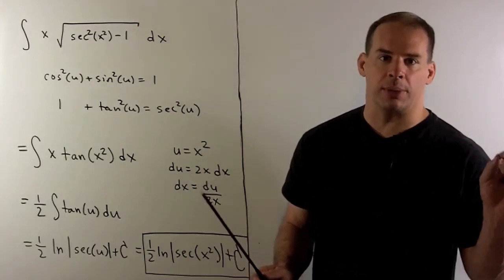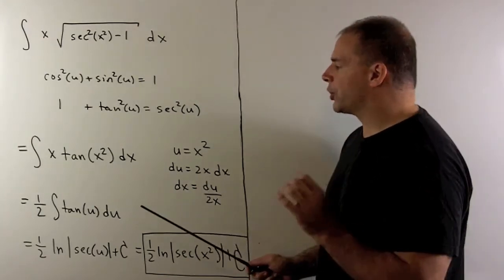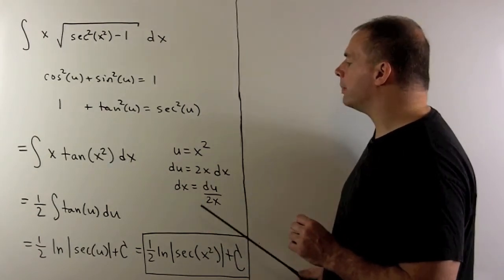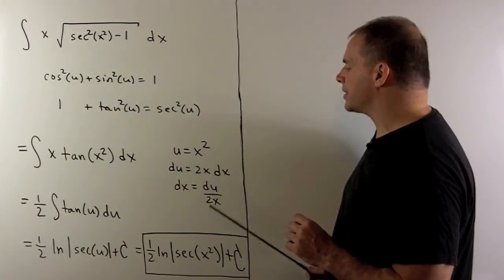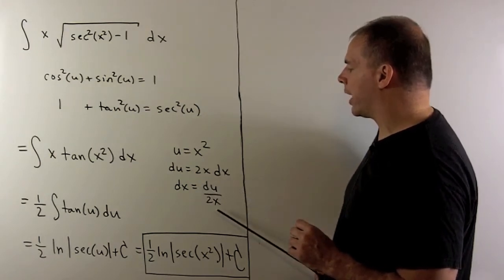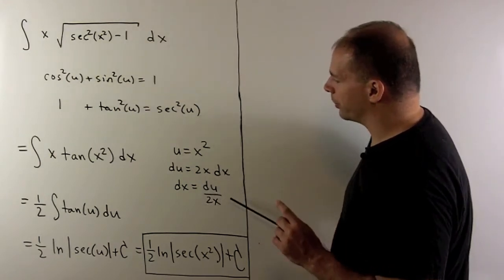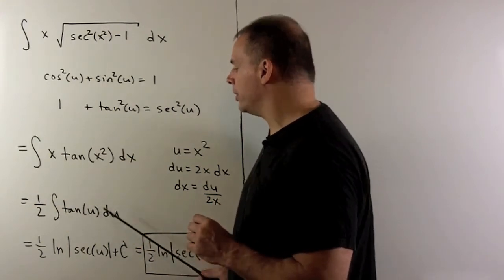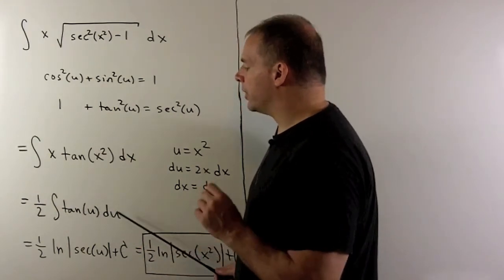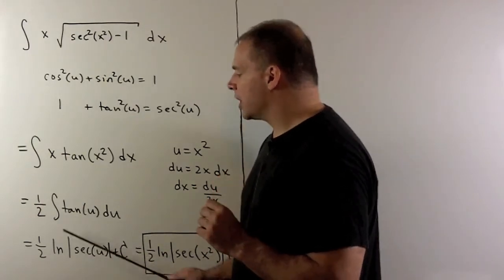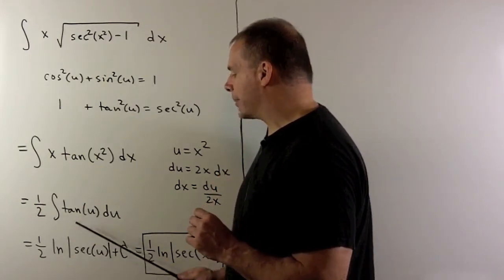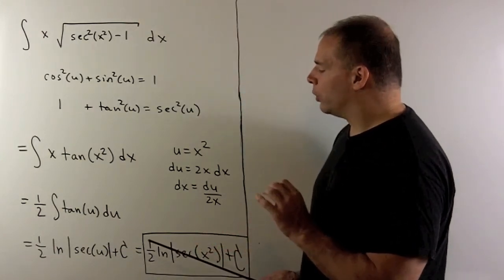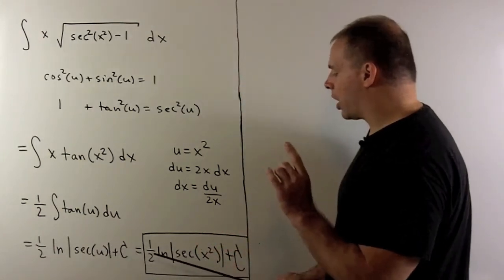Here, we can proceed using a u-substitution. We target our inside function, which is x squared, so we let u equal x squared. du equals 2x dx, so dx equals du over 2x. We substitute, and then we have one half times the indefinite integral of tan of u, du. Now we just look this up — that gives us one half natural log of the absolute value of secant of u plus a constant. Then we put x squared in for u to get our final answer.